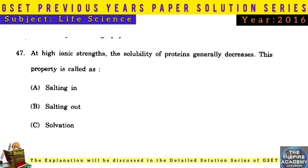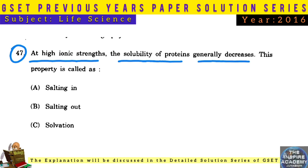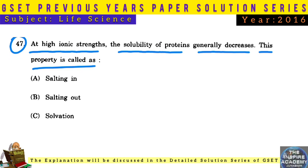Question No. 47: At high ionic strength, the solubility of proteins generally decreases. This property is called salting out.